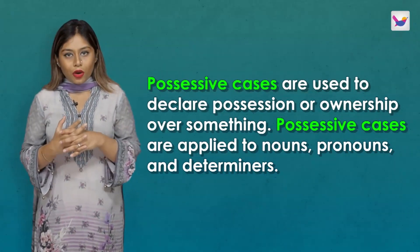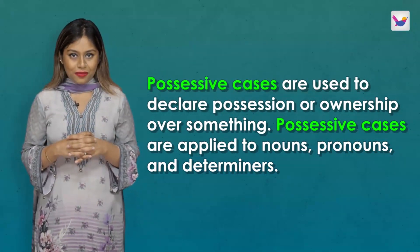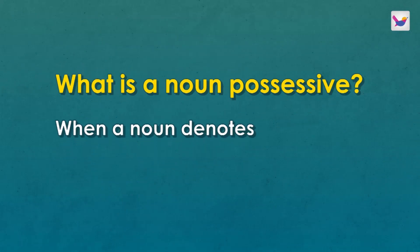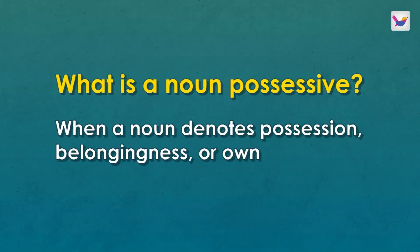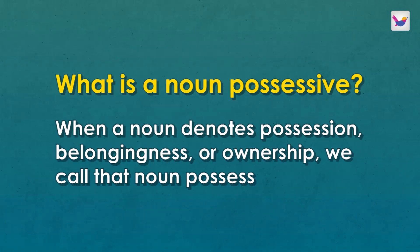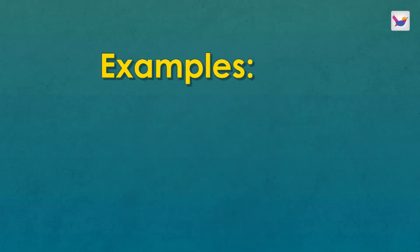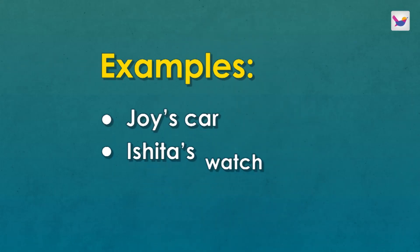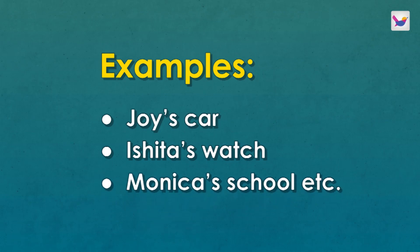Let's start with the definition of the possessive case. When a noun denotes possession, belongingness, or ownership, we call that noun possessive — or that noun is in the possessive case in English grammar. For example: Joy's car, Ishita's watch, Monica's school, etc.